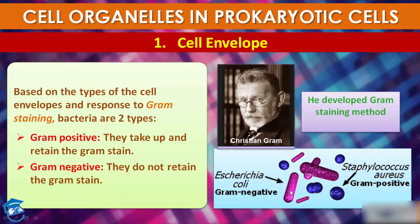For example, Escherichia coli (E. coli) is Gram-negative — that means it does not retain the Gram stain. Whereas Staphylococcus aureus is Gram-positive in nature, meaning it takes up and retains the Gram stain.